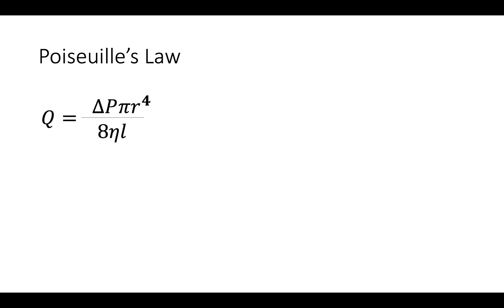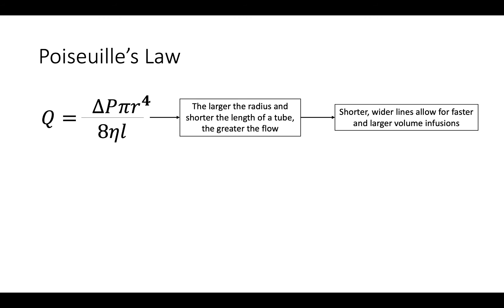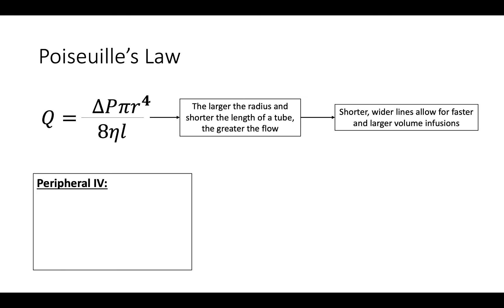Therefore, Poiseuille's law states that the larger the radius and shorter the length of a tube, the greater the flow. Clinically, this means that shorter and wider lines allow for faster and larger volume infusions. For peripheral IVs, the lower the gauge size, the wider the diameter — for example, a 16-gauge is larger than a 20-gauge.